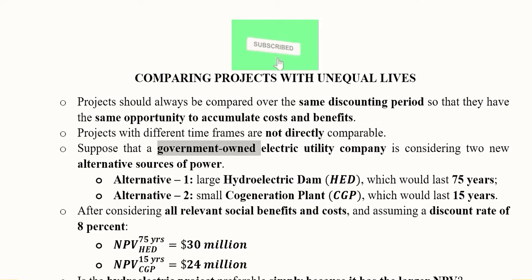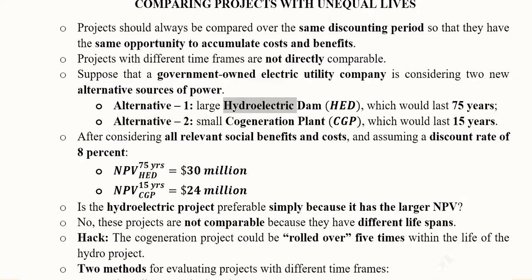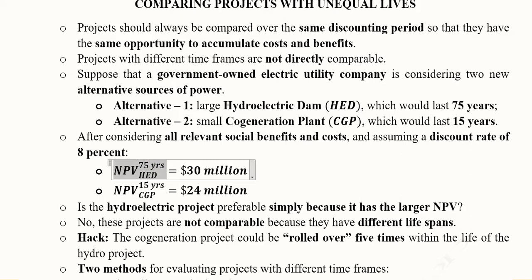In this example we have a government-owned electric utility company considering two alternatives to generate power. The first alternative is a hydroelectric dam likely to last 75 years. The second alternative is a small co-generation plant likely to last 15 years. After considering all relevant social benefits and costs and assuming a discount rate of 8%, the NPV of the hydroelectric dam is $30 million and the NPV of the co-generation plant is $24 million.